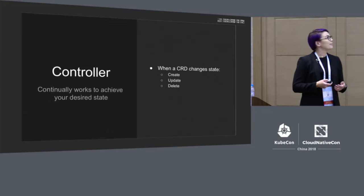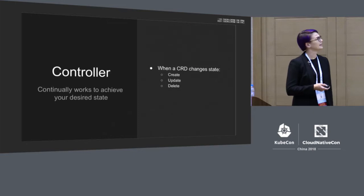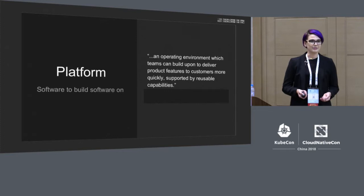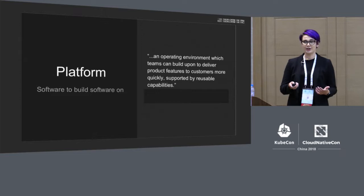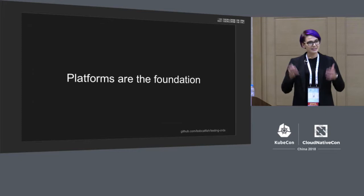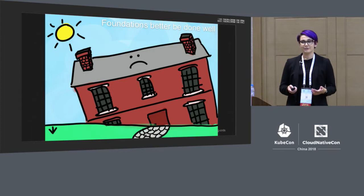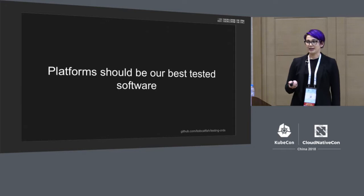Controllers are binaries that operate on your CRDs when they change state — when they're created, updated, or deleted. So why would you be making your own CRD-based system? It's usually because you're creating a platform. A platform is software that we build other software on top of, and usually the point of the platform isn't the platform itself — it's the things we want to build on top of it. That's where the real business value is. This puts a lot of pressure on us as platform developers, because if we don't build this foundation correctly, our users are going to have a very hard time. This means platforms should be our best tested software.